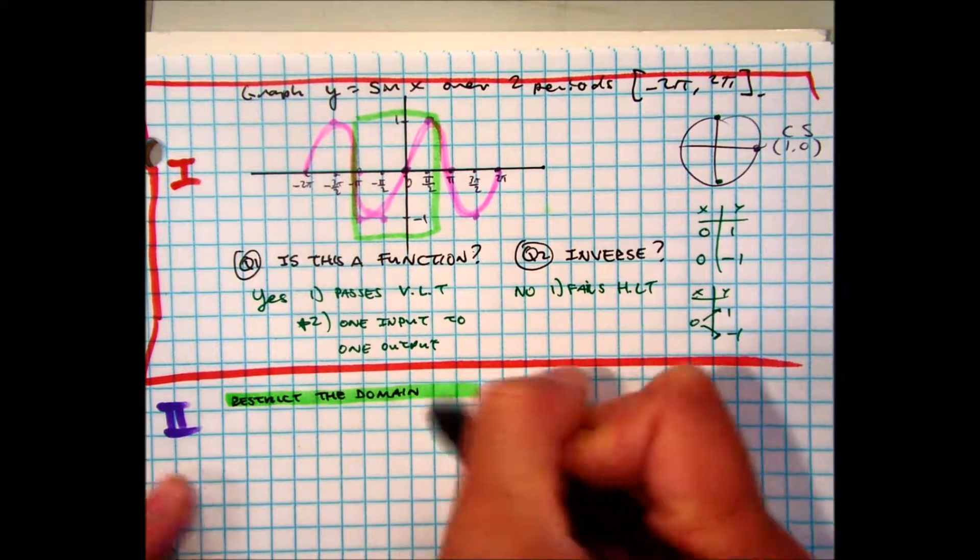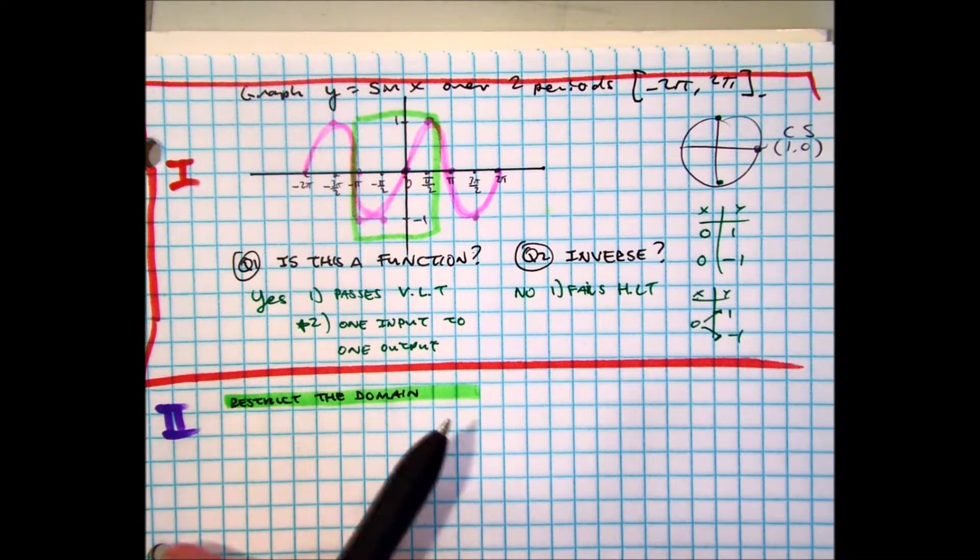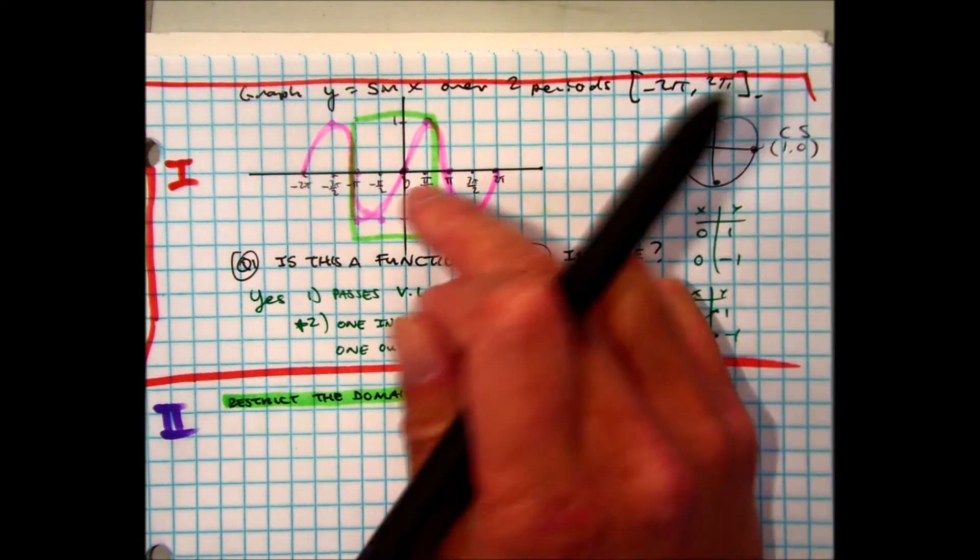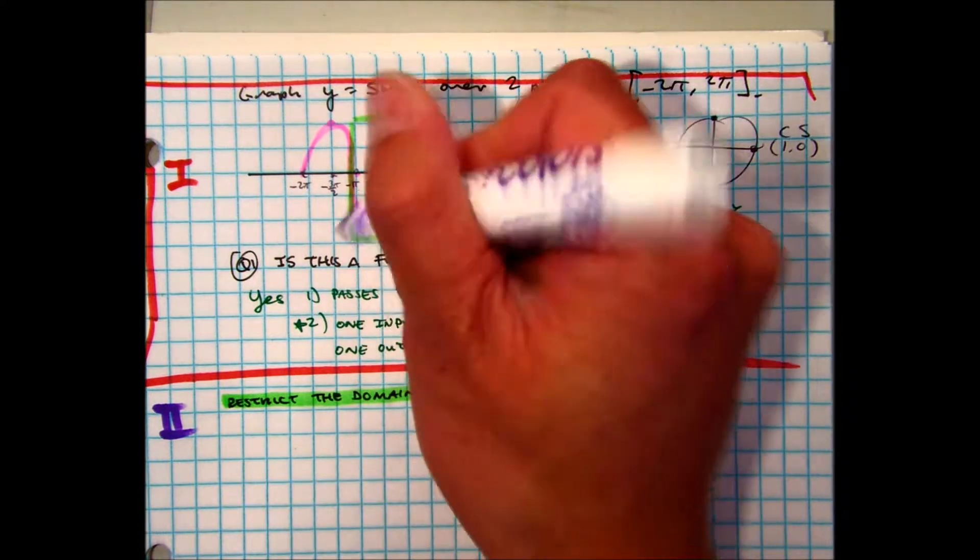I could restrict you from going to lunch. I could keep you in this class and you probably wouldn't be happy, huh? So that's called restricting. You're staying within a window. Now, if I copy this graph here, I'm going to highlight a color and I'm going to make it purple.